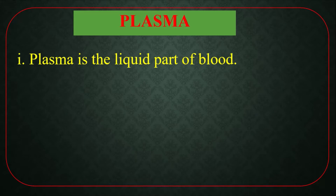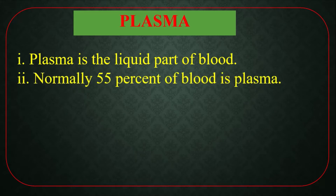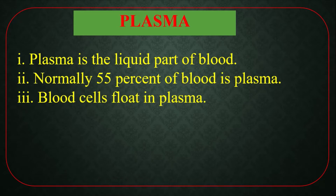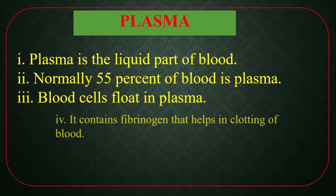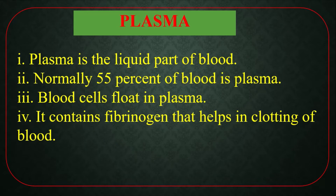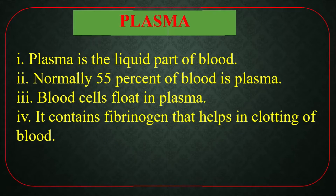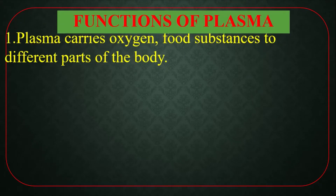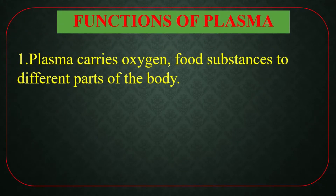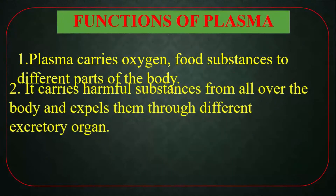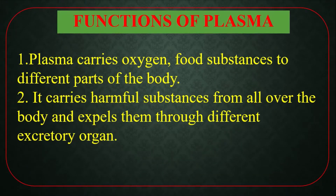Constituents of blood: number one, plasma; number two, blood cells. Plasma is the liquid part of the blood. Normally 55% of blood is plasma. Blood cells float in plasma. It contains fibrinogen that helps in blood clotting. Functions of plasma: it carries oxygen, carbon dioxide, and food substances to different parts of the body, and carries harmful substances out through different excretory organs.